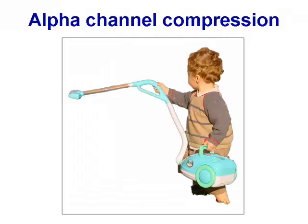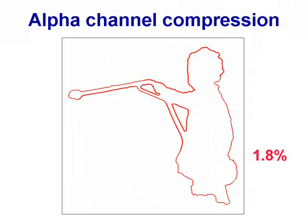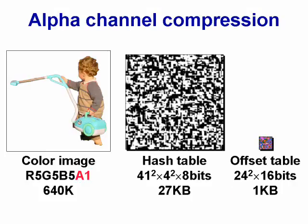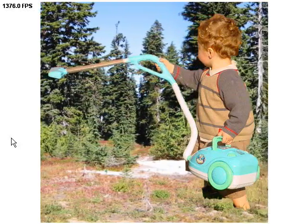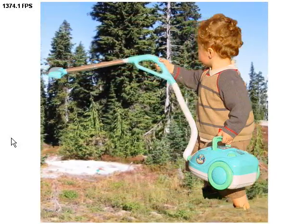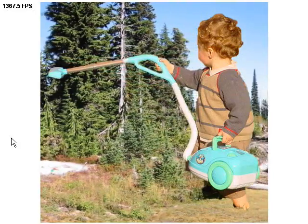In many images containing alpha masks, only a small subset of pixels have fractional alpha values. We pack these into a spatial hash and encode their locations using a 1-bit alpha channel. This compact representation renders at more than a thousand frames per second.